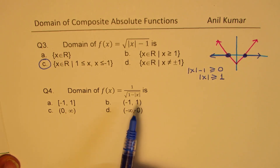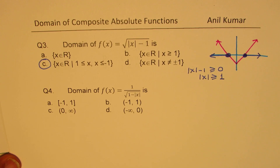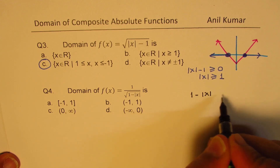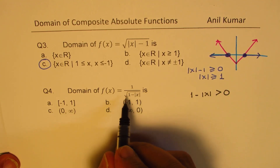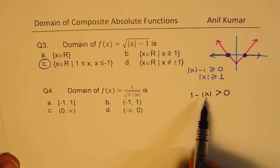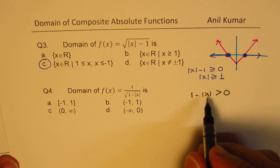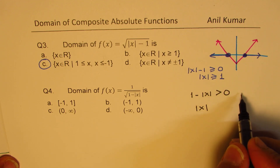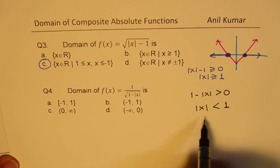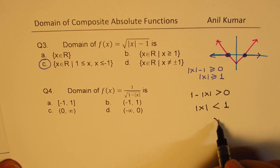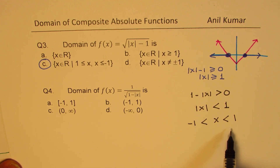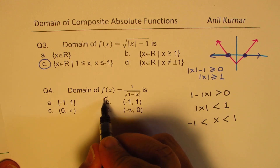Question number 4: this time we have an absolute function in the denominator inside a square root. We need 1 minus the absolute value of x to be strictly greater than 0 — it cannot equal 0 since it's in the denominator. That means the absolute value of x must be less than 1, so x is strictly between -1 and 1. The answer is option B.